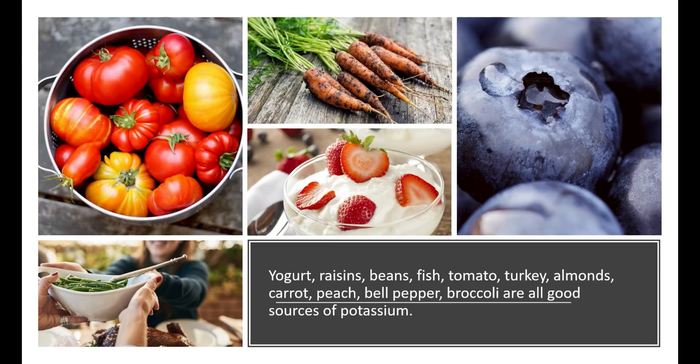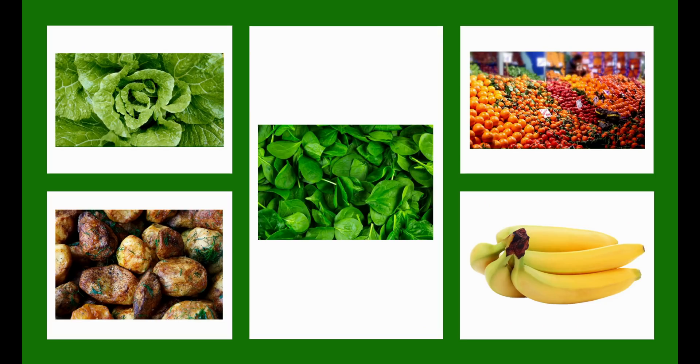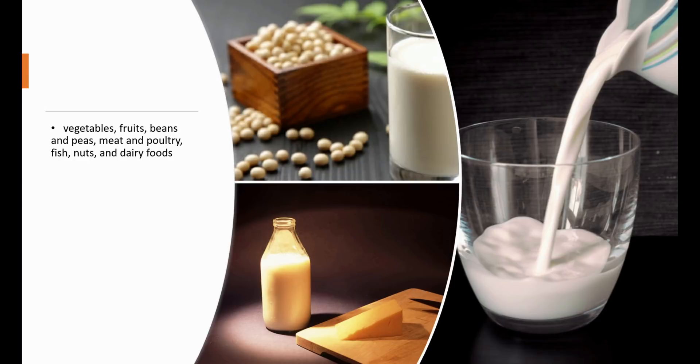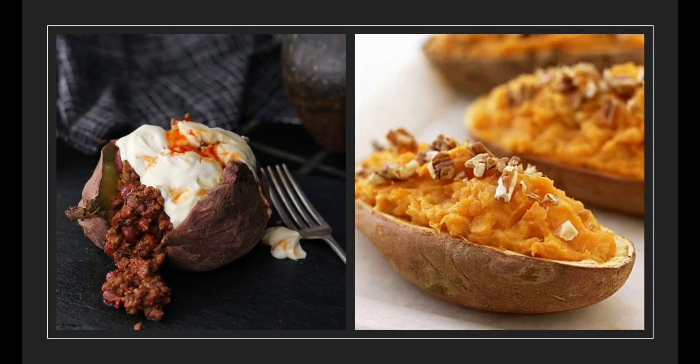A half cup of spinach or one medium banana can provide you 420 milligrams of potassium. One cup of fat-free milk or one half cup of mashed sweet potato can give you 380 milligrams of potassium.